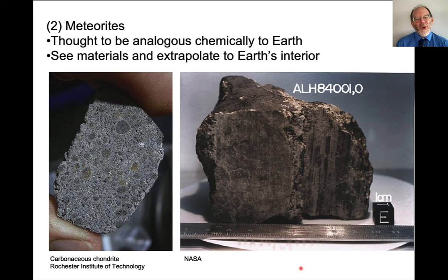Meteorites are thought to be analogous to the Earth in their chemistry. We see the materials that show up in meteorites and extrapolate to Earth's interior. In fact, this kind of meteorite — carbonaceous chondrite — is thought to be representative of one of the principal components of Earth's silicate interior.